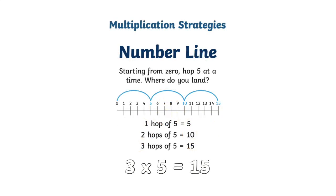Number line: starting from 0, hop 5 at a time. Where do you land?